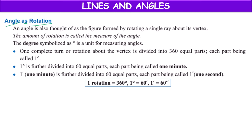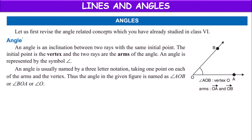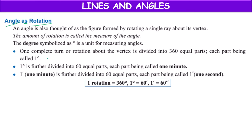Angle as rotation: we can also define an angle as a rotation. In the previous definition we said inclination between two rays, but we can also define angle using a single ray. An angle is also thought of as the figure formed by rotating a single ray about its vertex.